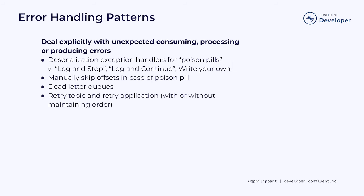Unexpected errors when consuming, processing, or producing data must be dealt with explicitly. When consuming, there might be cases where you cannot even deserialize the data — it's called a poison pill. No matter how many times the consumer tries, it will always fail to consume the message. When using Kafka Streams, you can specify a deserialization exception handler to deal with these kinds of errors.